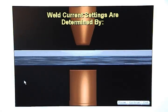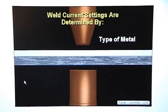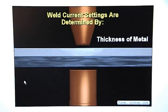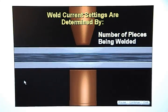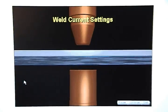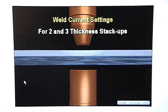Weld current settings are determined by the type of metal, thickness of metal, and the number of pieces being welded together. Weld current settings for two-thickness and three-thickness stack-ups.